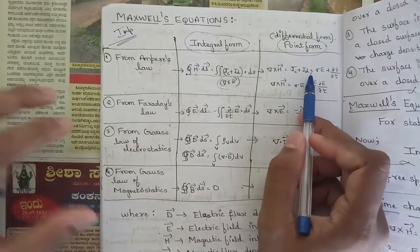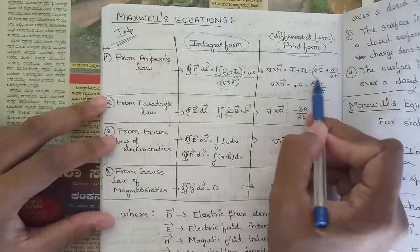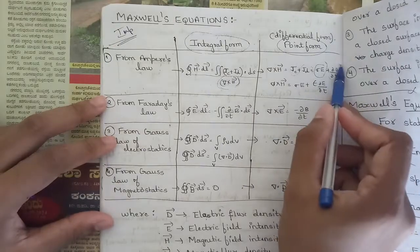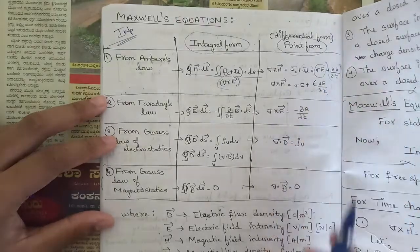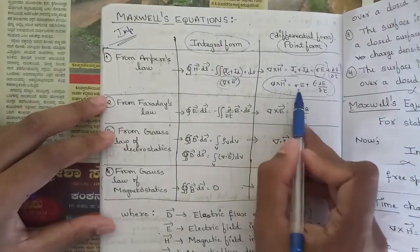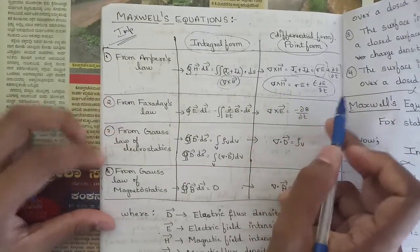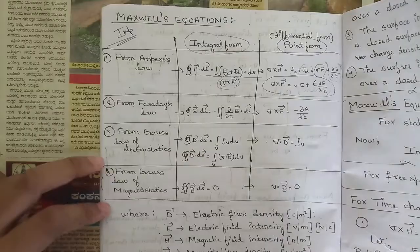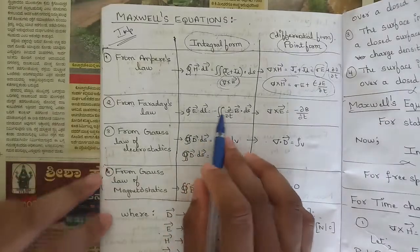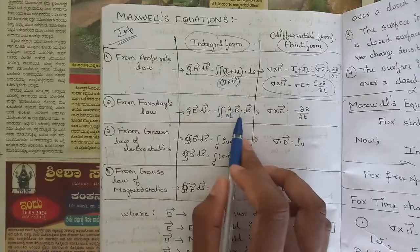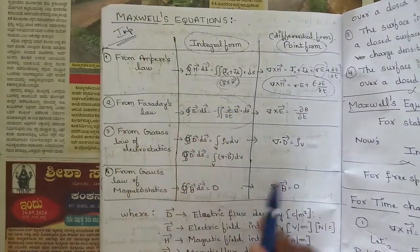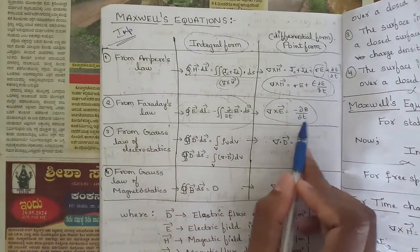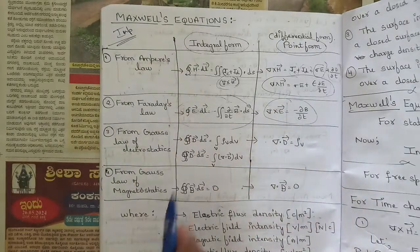In point form we have two relations: del cross H = Jc + Jd, where Jc = σE and Jd = ∂D/∂t = ε·∂E/∂t. So the point form equation is del cross H = σE + ε·∂E/∂t. From Faraday's law we have the integral form: the line integral of E·dl = minus the surface integral of ∂B/∂t·dS, and in point form: del cross E = −∂B/∂t.